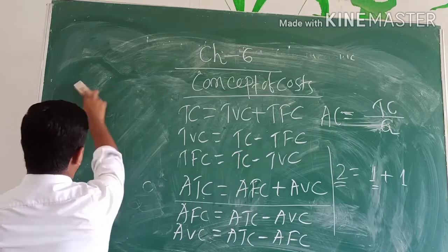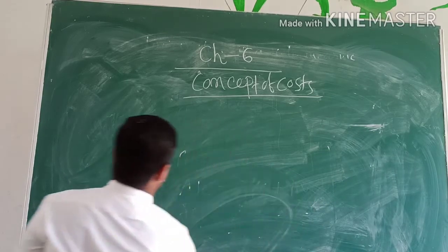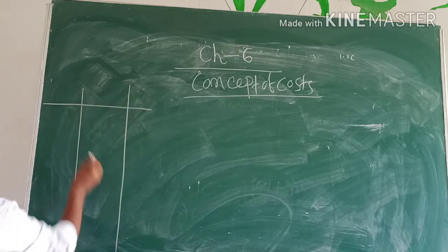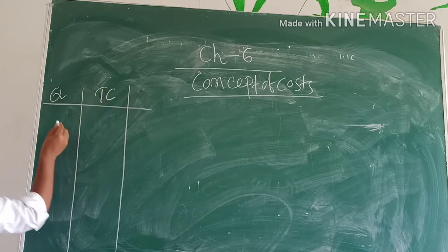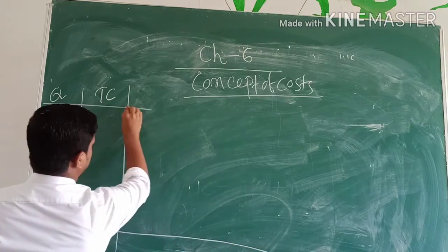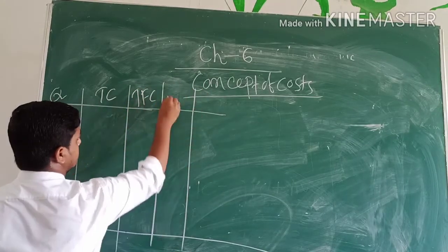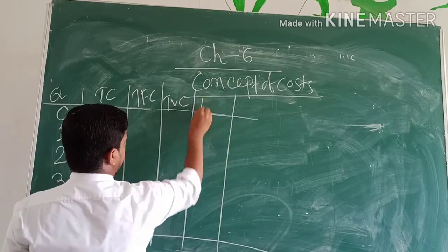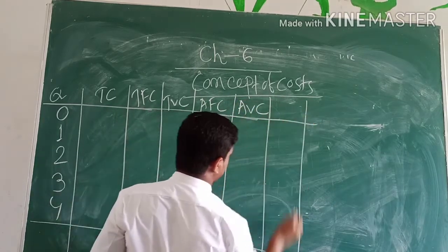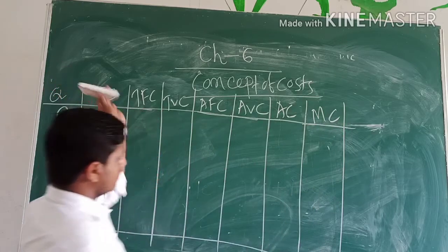So now we will show how we can find out various types of cost from the cost function. Suppose a cost function is given. Output is given and total cost is given. Output 0, 1, 2, 3, 4. Now we have to calculate TFC, then TVC, AFC, AVC, AC and MC.